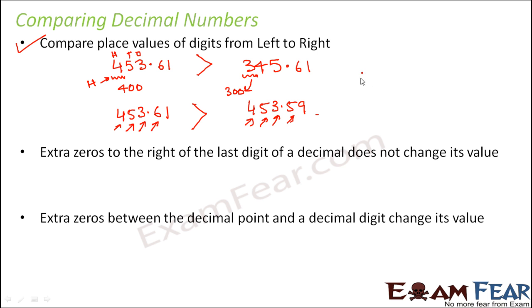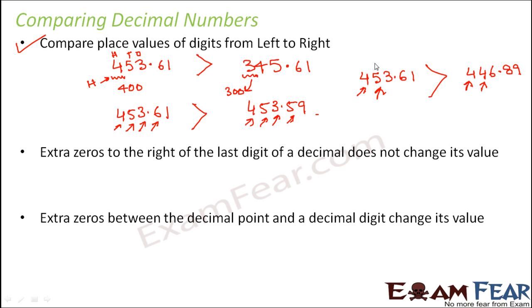Let's look at one more example: 453.61 versus 446.89. Comparing left to right — first digits are both equal; the second digit is 5 here and 4 there, so obviously 5 is greater, therefore 453.61 is bigger. Even though further along you have 8 and 9 which are larger, that doesn't matter because the moment we reach a digit which is bigger in one number, that number becomes bigger. So at the second place we've already decided — we do not move further. That's rule number 1, and it is the most important rule: compare place values of digits from left to right.